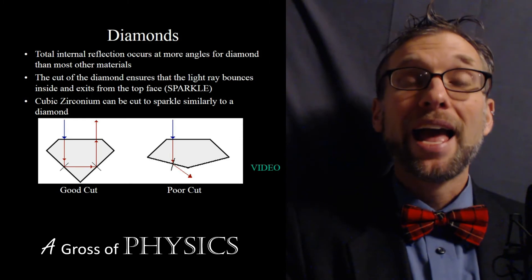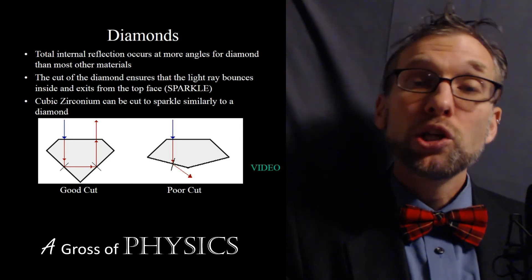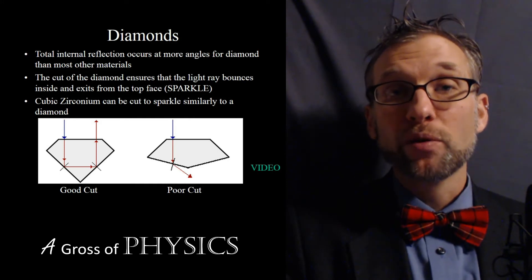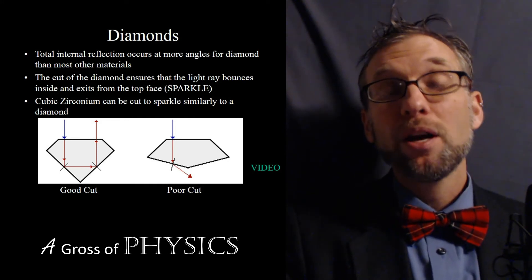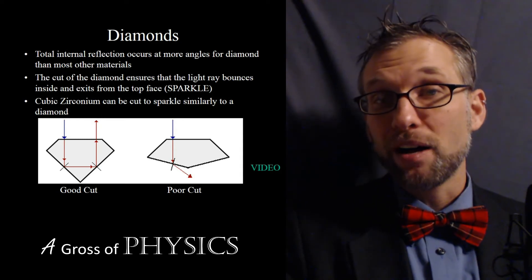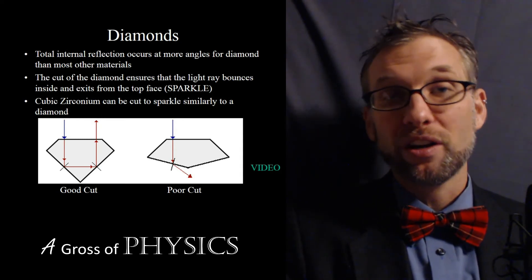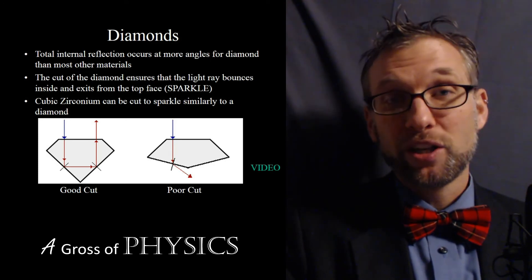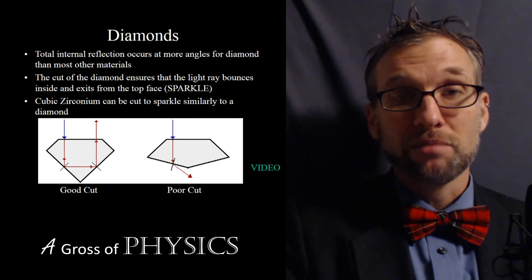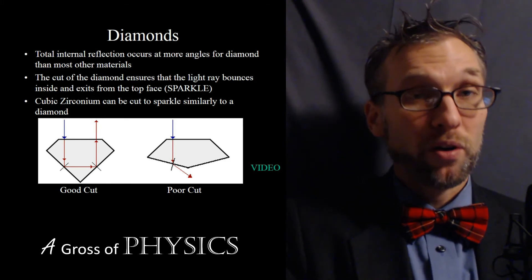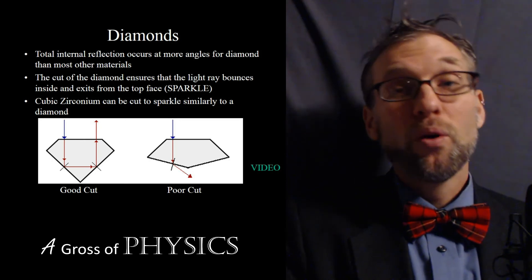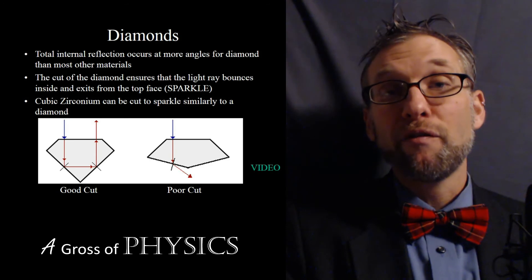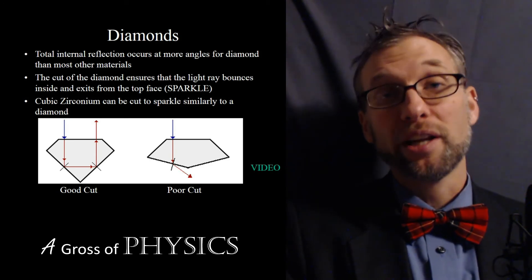Because jewelers know that diamond traps light at around 24 degrees, they cut the diamond so that when light enters the top, it bounces around inside the diamond and leaves out the top. A good jeweler cuts a diamond to keep the light bouncing around as much as possible so it comes back out the top — that's the sparkle you see.